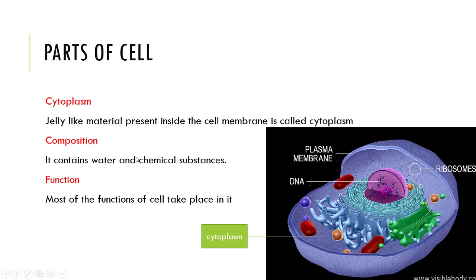The composition of cytoplasm: it contains water and chemical substances. Many cell organelles are present in it. As you can see in this diagram, most of cell functions take place in cytoplasm. This is the function of cytoplasm.